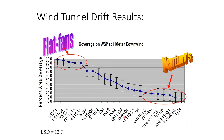Wind tunnel testing demonstrates these differences clearly. Looking at different nozzle types — from flat fans through turbo tees to air induction and ultra-low drift nozzles — the air induction nozzles produce significantly less coverage one meter downwind, showing how much more effective they are at reducing drift compared to flat fan nozzles at higher pressures.